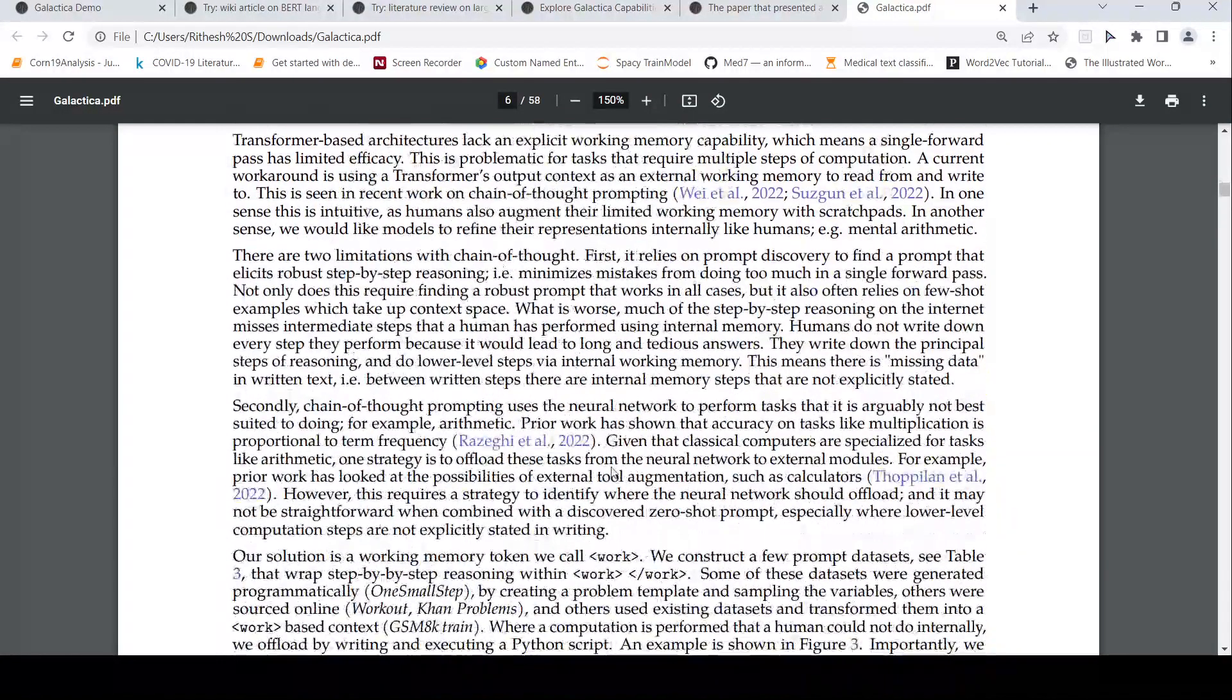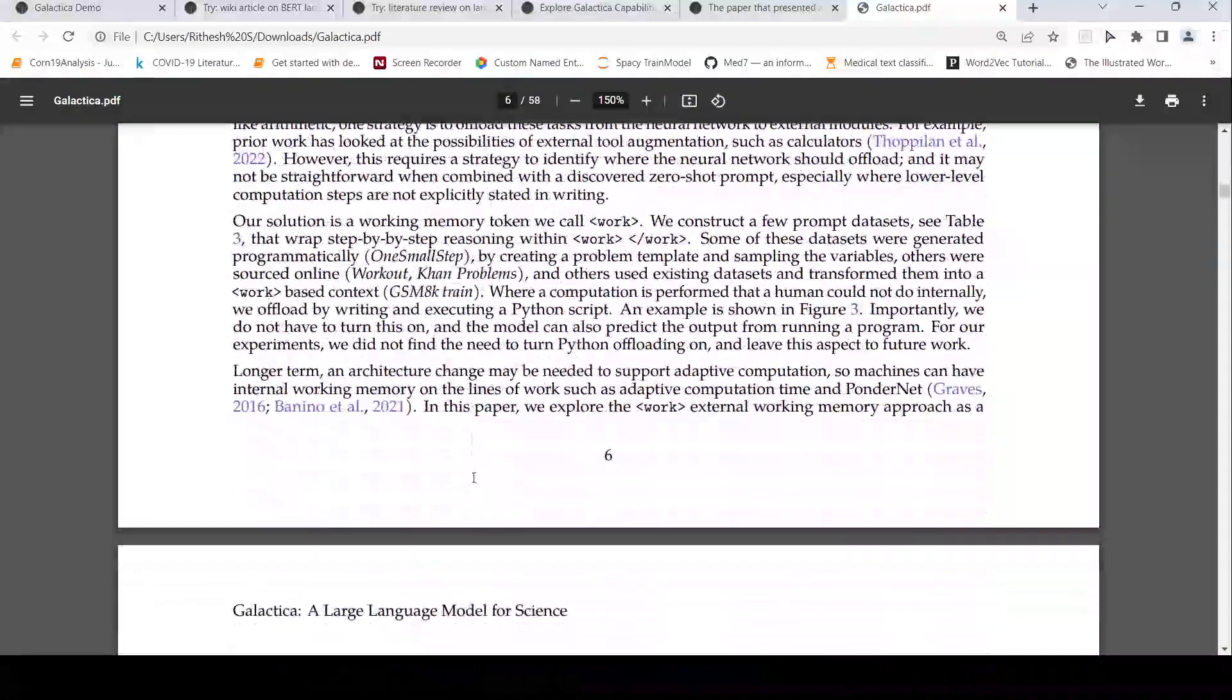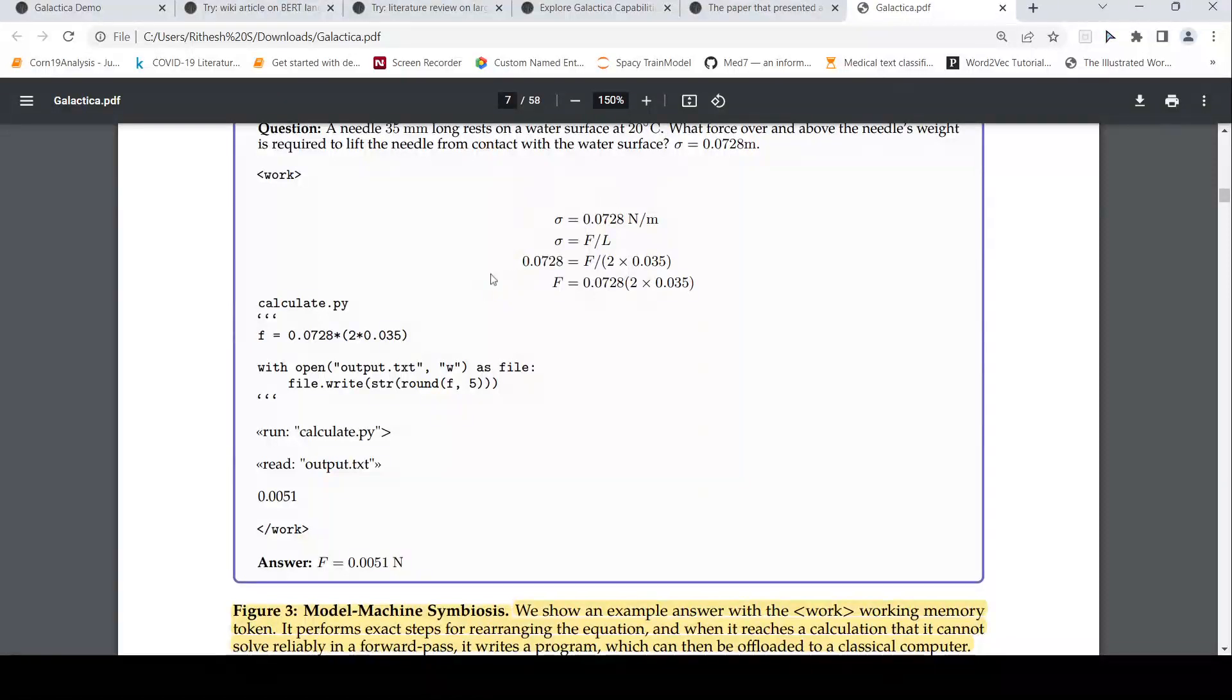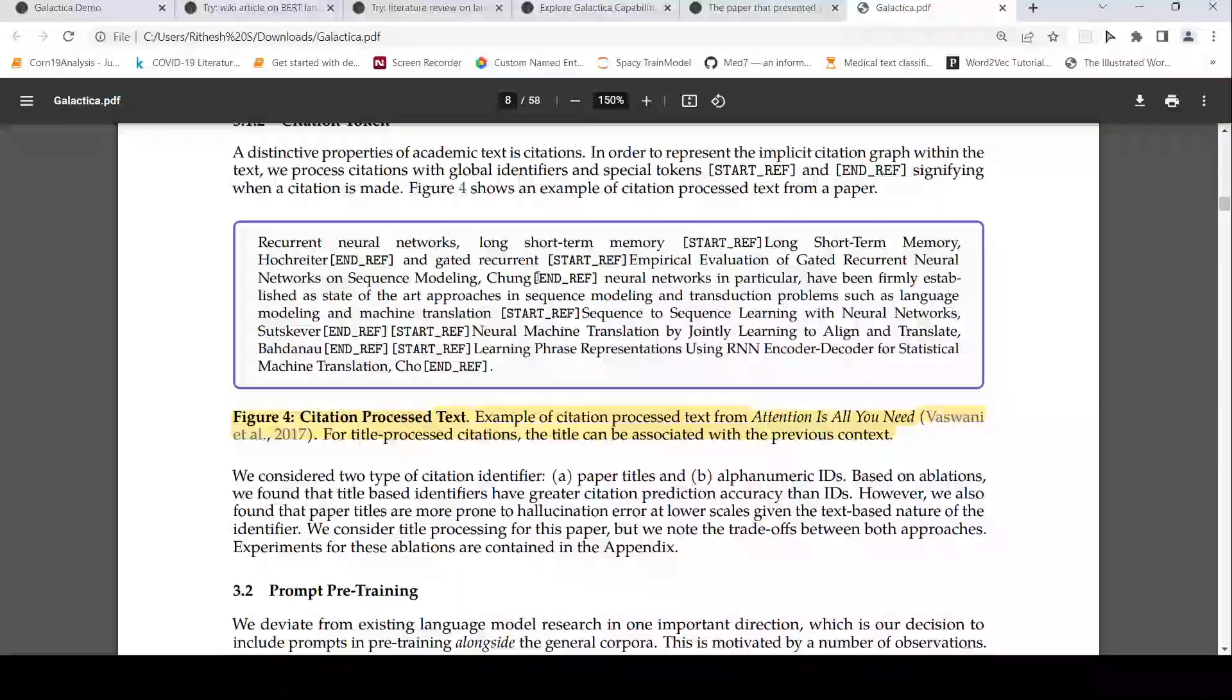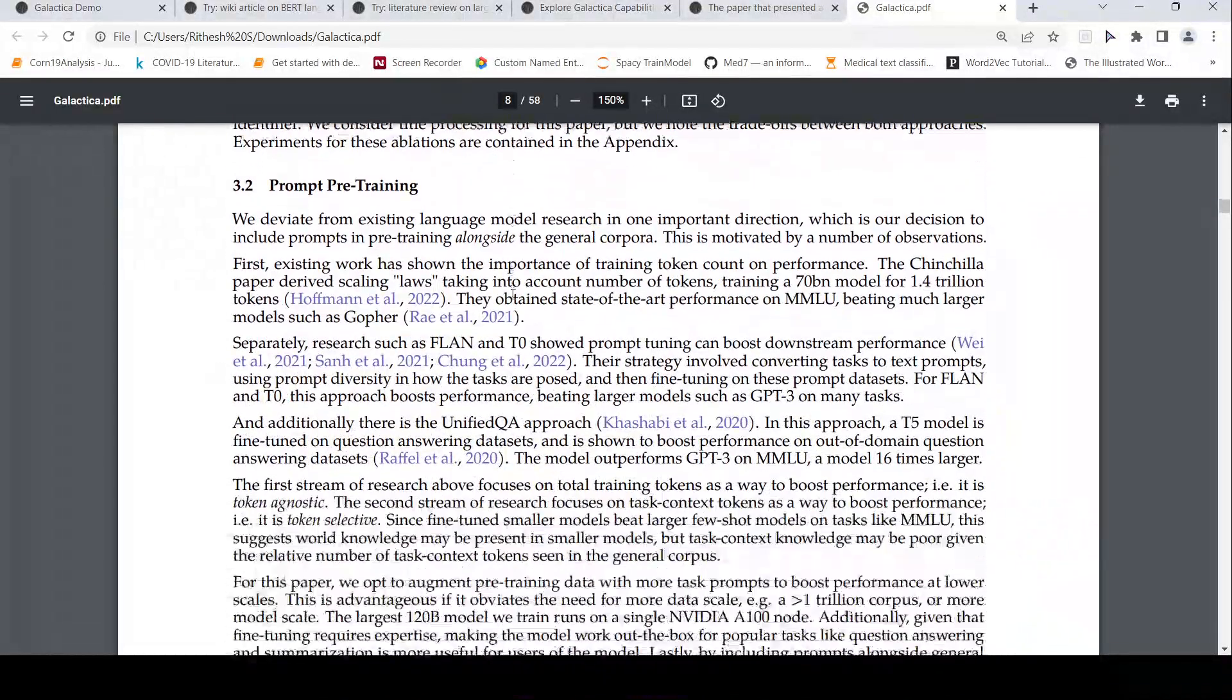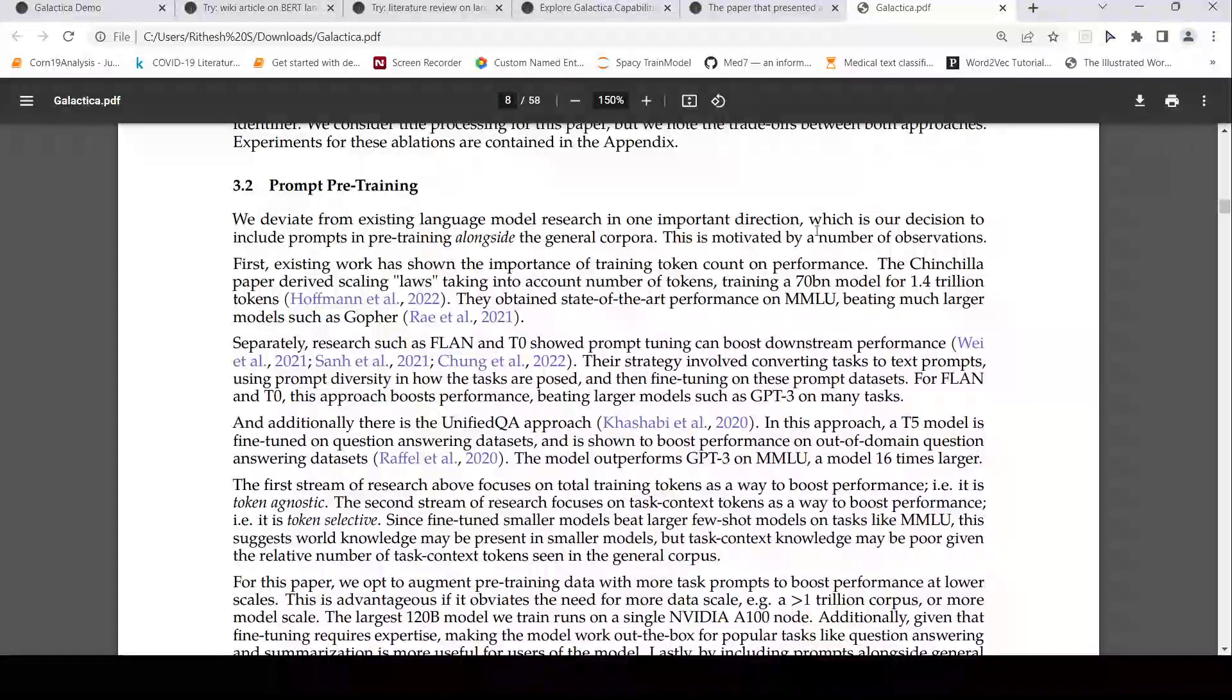They also explained a little bit detailed upon this working memory token or work for reasoning tasks. What they say is that if there is a question like this, then the prompt, they tokenize it like this. So there is work. What happens over here is that example answer with the work working memory token, it performs exact steps for rearranging the equation. And when it reaches a calculation that it cannot solve reliably in a forward pass, it writes a computer program, which can be offloaded to a classical computer to solve the equation. For citation token, as I told before, if this is a piece of text, they add start reference, end reference. So that means that some paper was referred over here in this particular piece of text. So that is how they pre-processed for the citations.